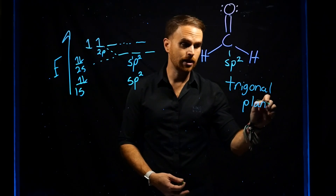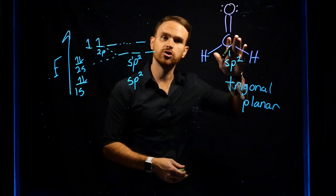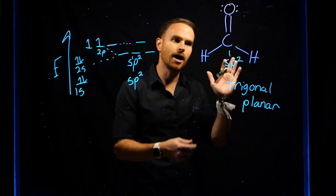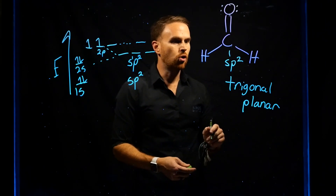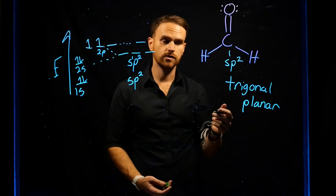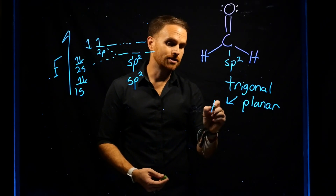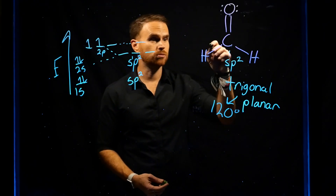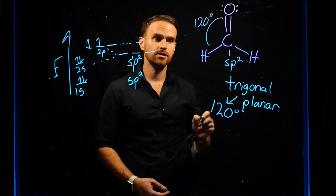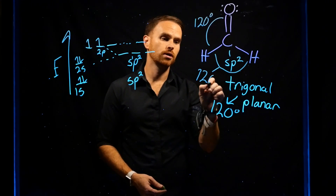Trigonal planar means that this is a planar molecule — it's flat. From here we can also determine the bond angle around each of these bonds. Trigonal planar always forms bonds around the center atom that are 120 degrees, which means the angle between these two bonds is 120 degrees, and similarly the angle between these other two bonds is also 120 degrees.